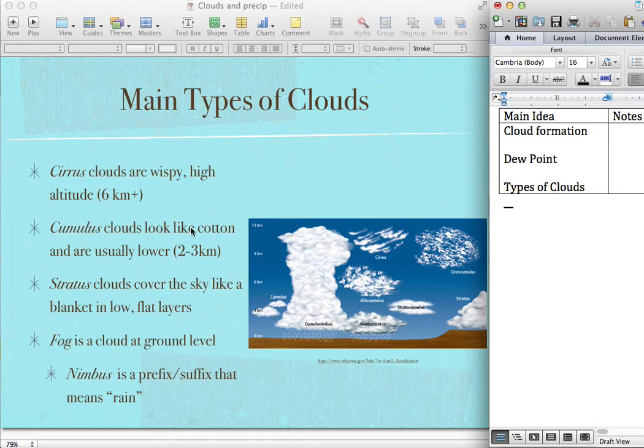Cumulus clouds are like cotton balls and are lower in the sky. And then stratus clouds cover the sky like a blanket in low, flat layers. Like yesterday or two days ago when it's raining a lot, usually we have stratus clouds.